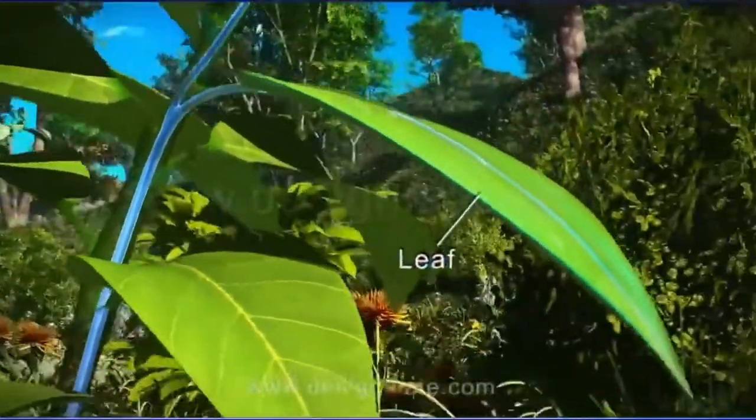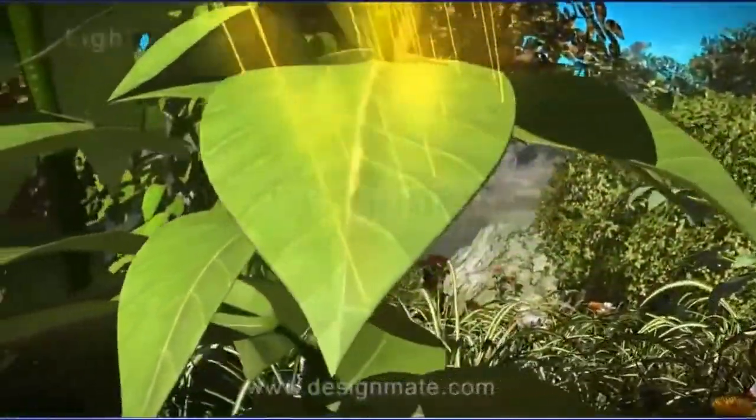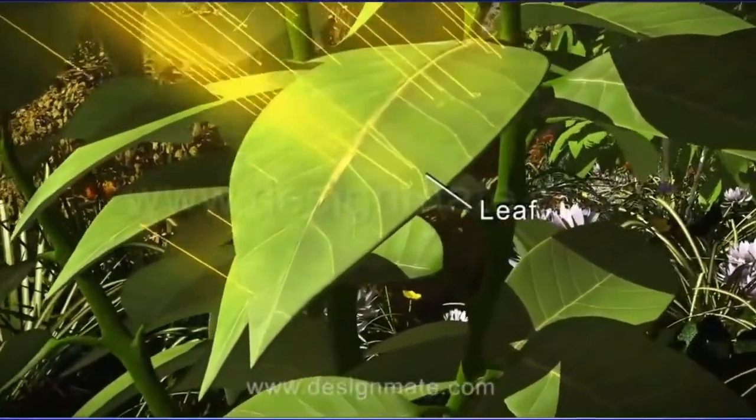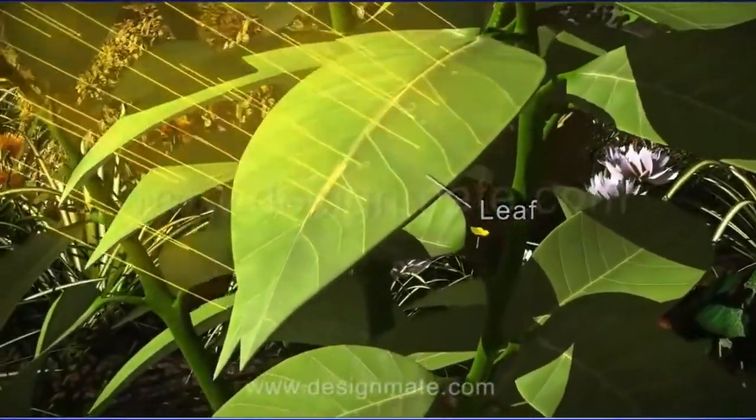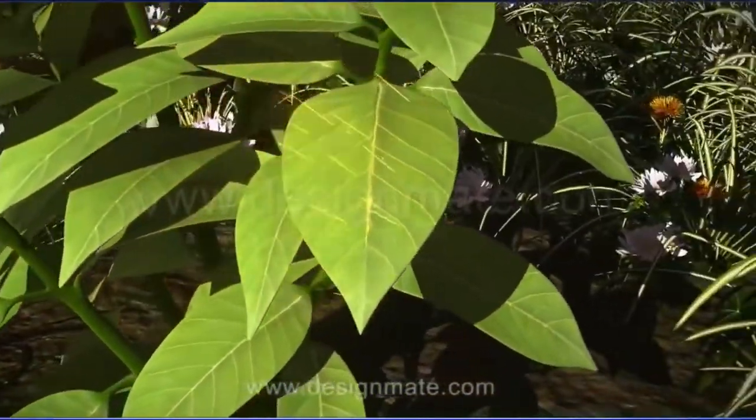And then to the leaves. The stem holds the leaves in such a way that they absorb maximum energy from sunlight. A leaf is a very important part of the plant. Photosynthesis, the ultimate provider of food and oxygen, occurs in the leaf.